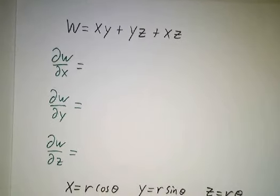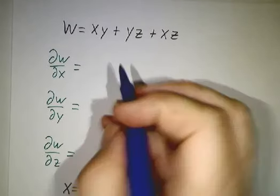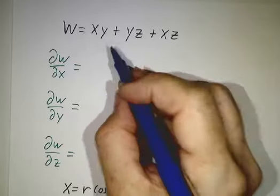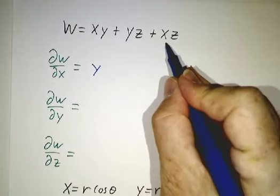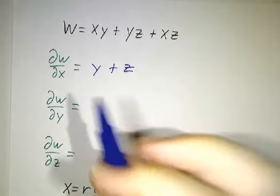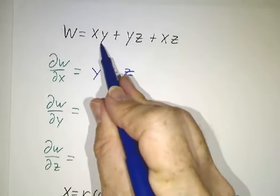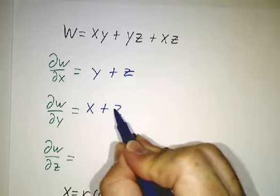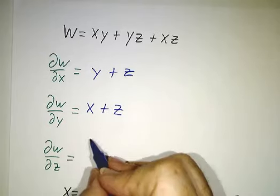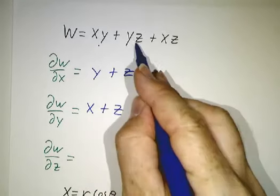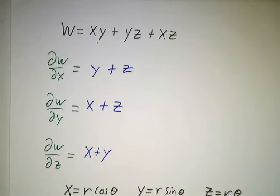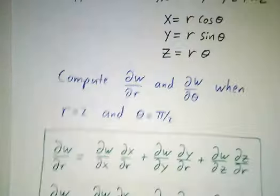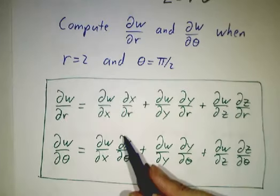First we need to compute the partials of w with respect to x, y, and z. These are straightforward. The derivative of w with respect to x is y + z, the derivative with respect to y is x + z, and the derivative with respect to z is y + x.